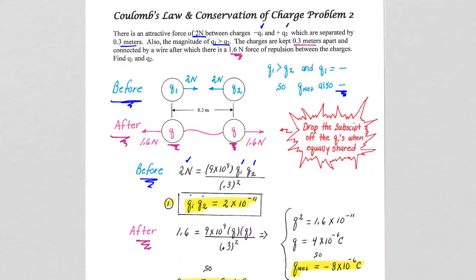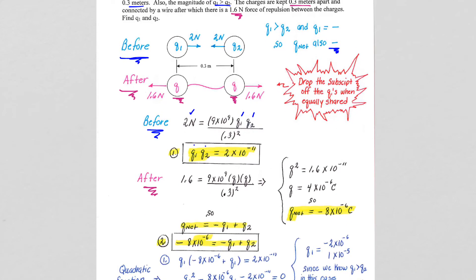So the after case tells us that the Q, so we're going to go from Coulomb's Law here to our after case situation where we'll solve this for Q squared, then square root it. And now we have to think a little bit because we know that the two Qs when added together represent our net charge.